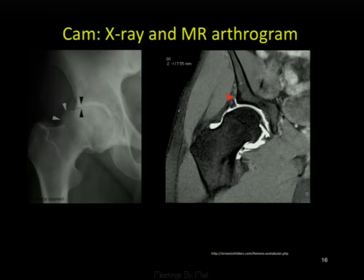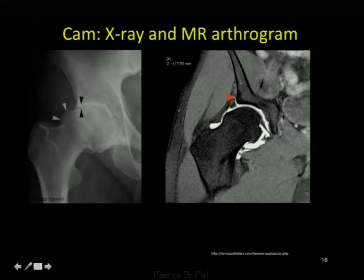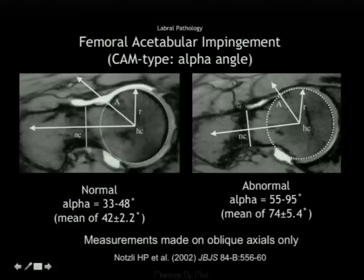That helps the surgeon know for certain that the pain is coming from the hip joint itself. Here we see a large labral tear as a result of this CAM deformity—a separation of the labrum from the acetabulum.